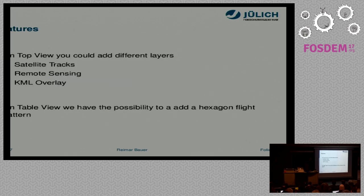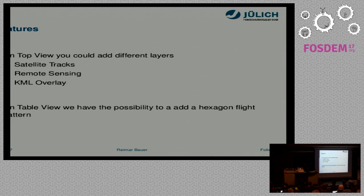You can also add other elements to the top view — for example, satellite tracks, since aircraft measurements are sometimes used to check or validate satellite instrument data. There are also remote sensing overlays, or a KML overlay if you want to mark territorial borders or no-fly zones. You can also add complex flight patterns, such as a hexagon flight pattern for an instrument that needs to fly a circular pattern over the same air mass.